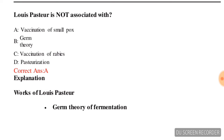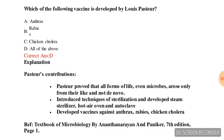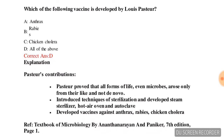Next question: which of the following vaccines was developed by Louis Pasteur? Options are: anthrax, rabies, chicken cholera, or all of the above. The correct answer is option B — all of the above. All options are correct here.